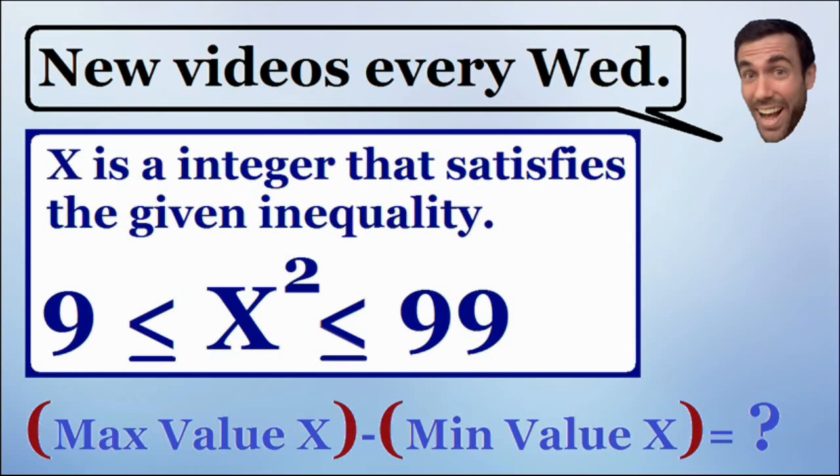First, let's talk about the maximum value of x. Well, we know x is an integer, which means it has to be a whole number. So the biggest whole number that satisfies this equation is 9.